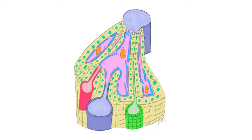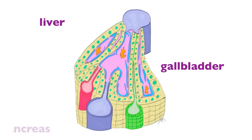In this video we're going to talk about three of the accessory organs to the digestive system. We've talked fairly extensively about the digestive tract from the mouth, pharynx, esophagus, stomach, small and large intestine, but this is going to be about three accessory organs: the liver, the gallbladder, and the pancreas, with the main focus on the liver.